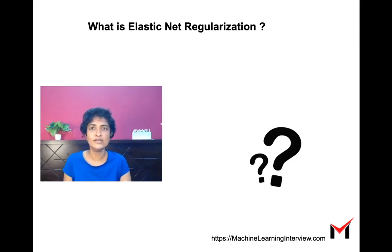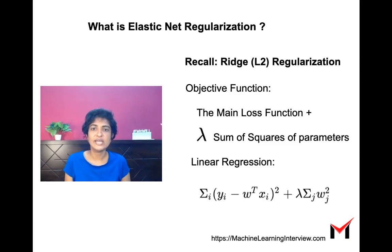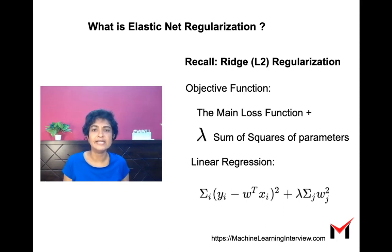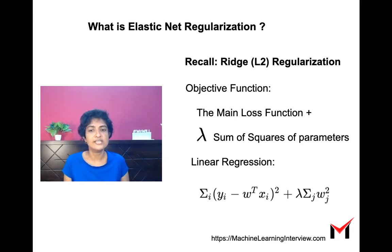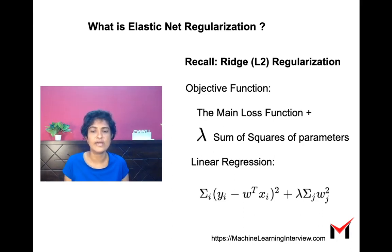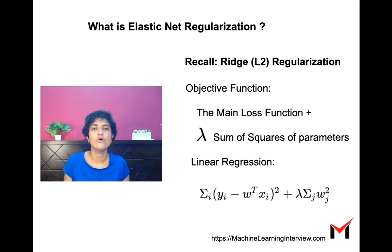Let us quickly recall ridge and lasso regression. In ridge regression, or L2 regularization, we add the sum of the squares of the parameters as a penalty term to the main loss function, and we give a weightage of some lambda to this additional term. In standard linear regression, the main loss function is the sum of squared residuals (yi minus w-transpose xi), and we add the penalty term which is the sum of squares of all weights, sigma over j of wj squared.